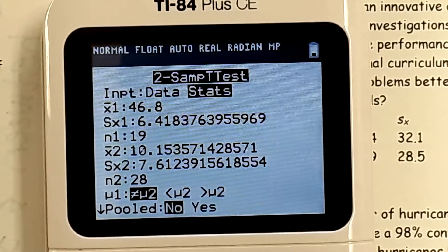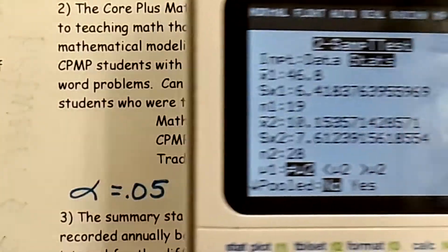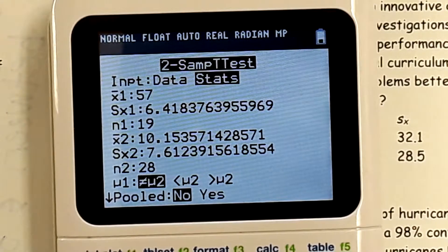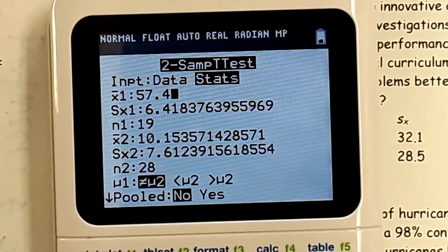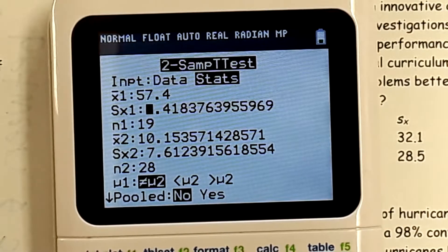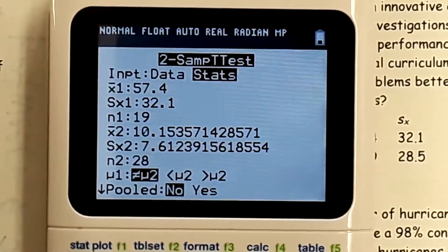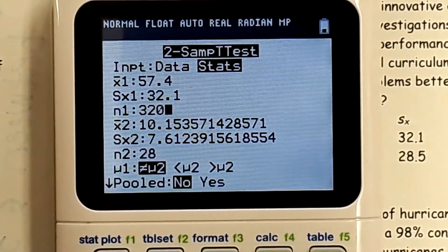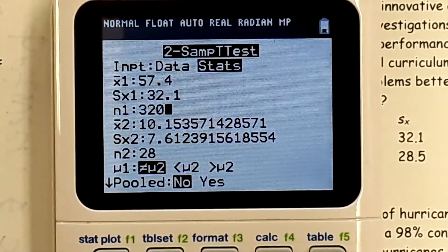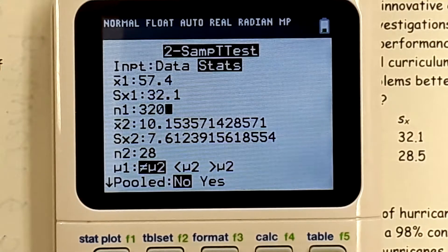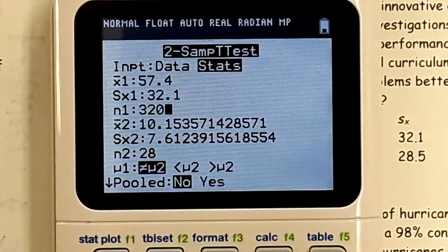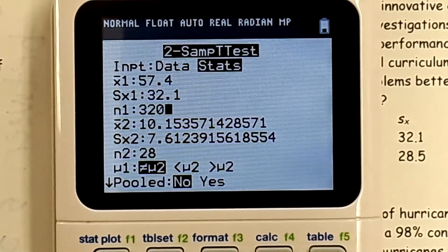My X bar 1 is what? 57.4. And that's our CPMP, right? And then our S of X was 32.1, and our sample size was 320. Does that meet CLT, you guys? If this was a word problem, would that meet CLT? Yes. Doesn't matter anything. That's a CLT problem.